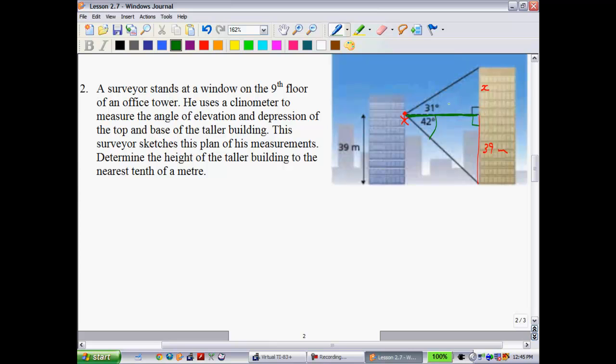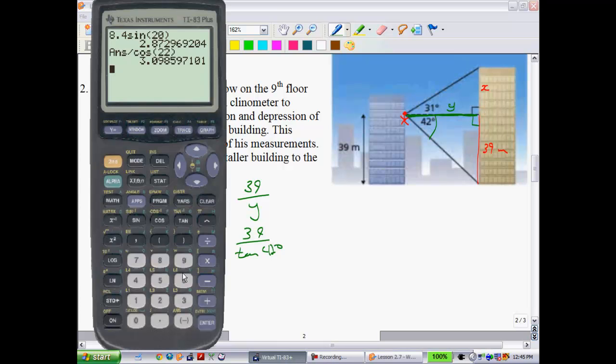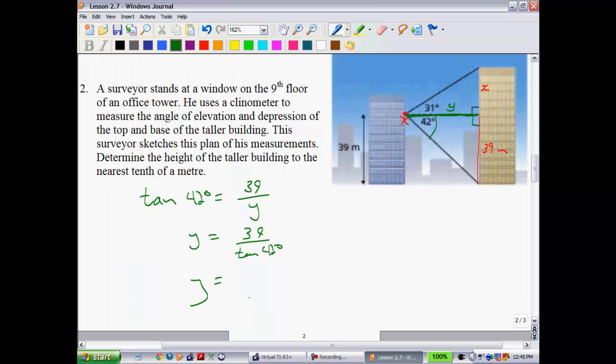The tangent of 42 degrees is equal to the opposite 39 meters over the adjacent, which we'll call y. In order to get y by itself, we swap those. 39 divided by the tangent of 42 degrees is equal to 43.31388 dot dot dot.